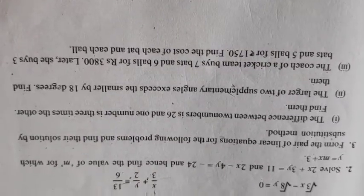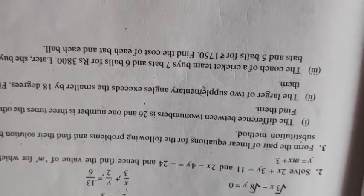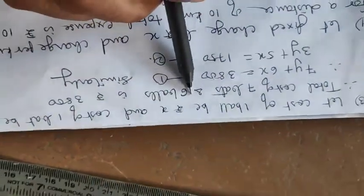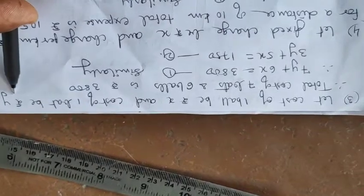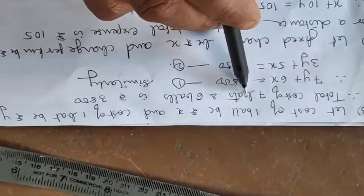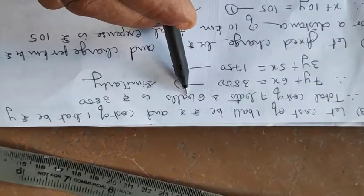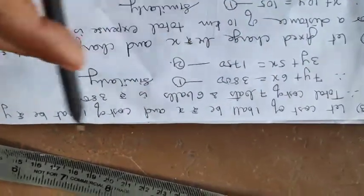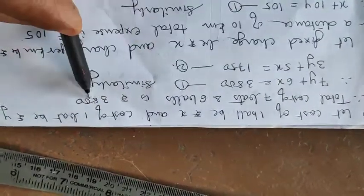The third sum which is given to you. Next question. Next question says a coach of a cricket team is buying 7 bats and 6 balls for 3800. Later, she buys 3 bats and 5 balls for 1750. You have to find the cost of each bat and each ball. So here you have to assume the value of the bat and the ball. So let us move into the sum.